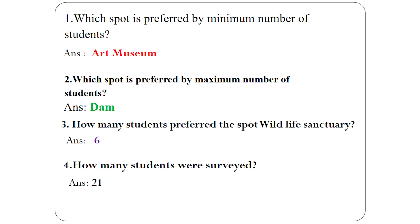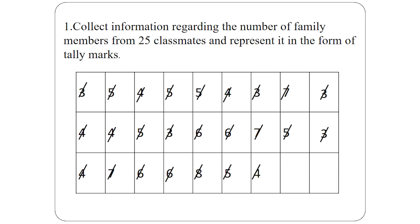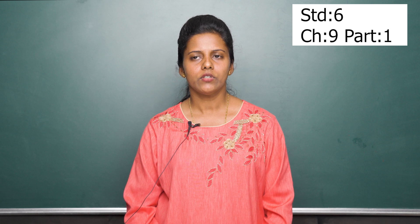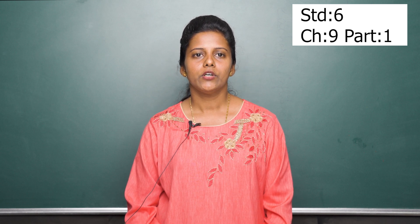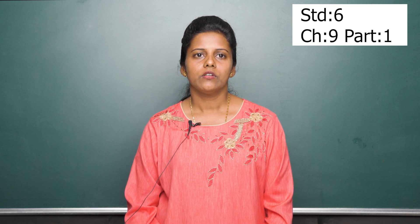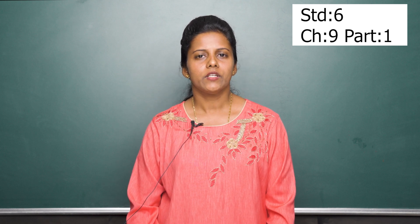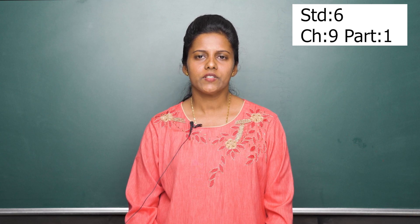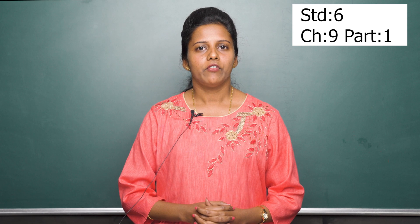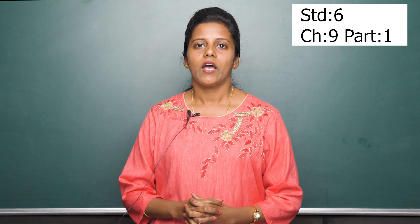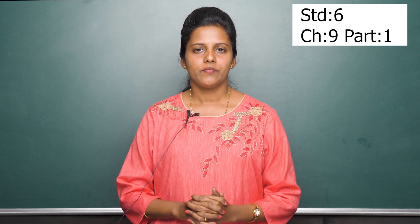Now here is an activity for you. Collect information regarding the number of family members from 25 classmates and represent it in the form of tally marks in a table. Note that family members include your mother, father, brothers, and sisters. Do not include your grandparents, aunts, or uncles. Solve this problem in a similar manner to the previous example. In today's class, we have learned about data and tally marks. All the best, students. Thank you.